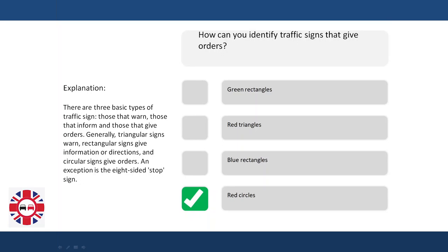Explanation: There are three basic types of traffic sign. Those that warn, those that inform, and those that give orders. Generally, triangular signs warn, rectangular signs give information or directions, and circular signs give orders. An exception is the eight-sided stop sign.